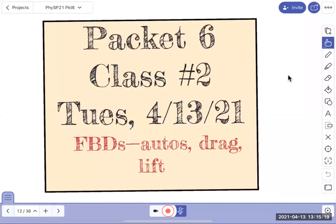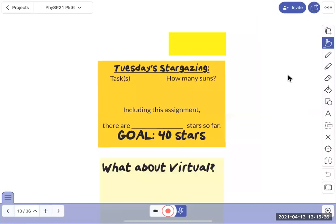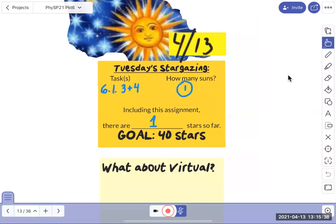Here we are, packet six, class number two. We're going to get into free body diagrams. That's the basic idea for the next couple of weeks, but we'll get to a lot of things that need to be talked about in order to understand free body diagrams. It's a bunch of arrows, but all right.